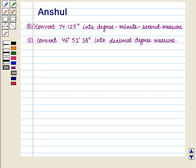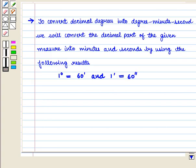Hello and welcome to the session. In this session we are going to discuss the following question: 1. Convert 74.125 degrees into degree minute second measure. 2. Convert 46 degrees 52 minutes 38 seconds into decimal degree measure.